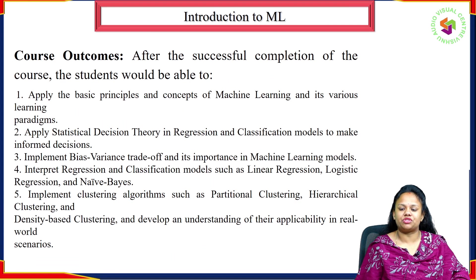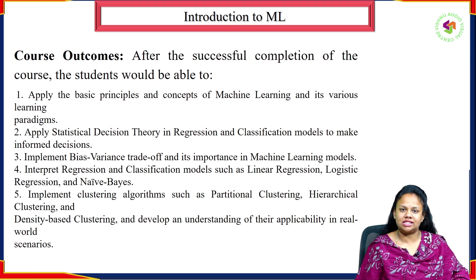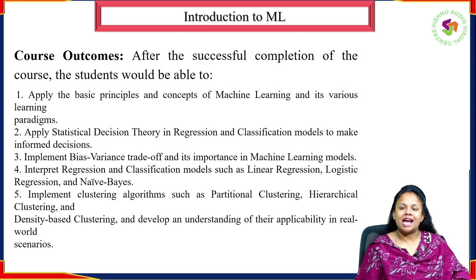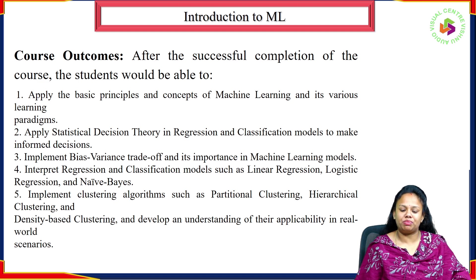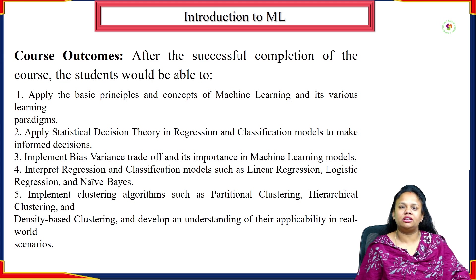Next are the course outcomes. After successful completion of the course, students will be able to: apply the basic principles and concepts of machine learning and its various learning paradigms; apply statistical decision theory in regression and classification models to make informed decisions; implement the bias-variance trade-off and its importance in machine learning models; interpret regression and classification models such as linear regression, logistic regression, and Naive Bayes; implement clustering algorithms such as partition clustering, hierarchical clustering, and density-based clustering; and develop real-world applications based on what we have studied.